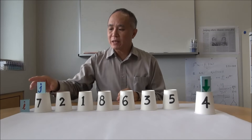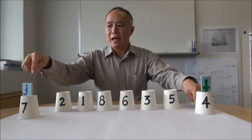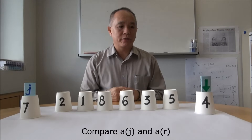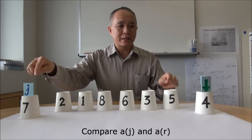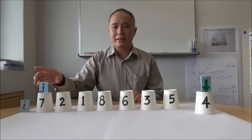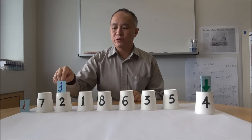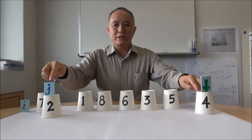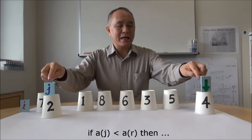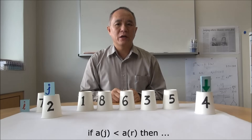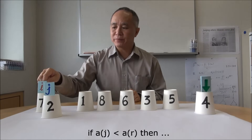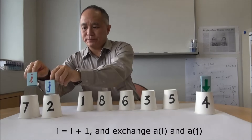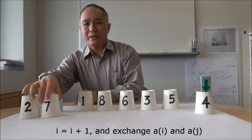We first make a comparison between the pivot and the jth element. Now if the jth element is larger than the pivot, we do nothing — we move the counter j forward. But if the jth element is less than or smaller than the pivot, we increment i and then we do a swap between the i and j positions.